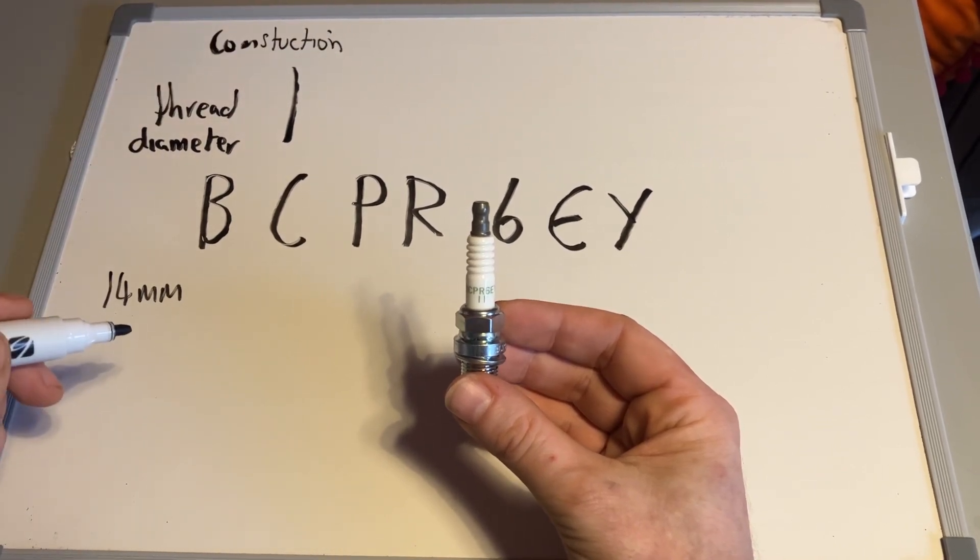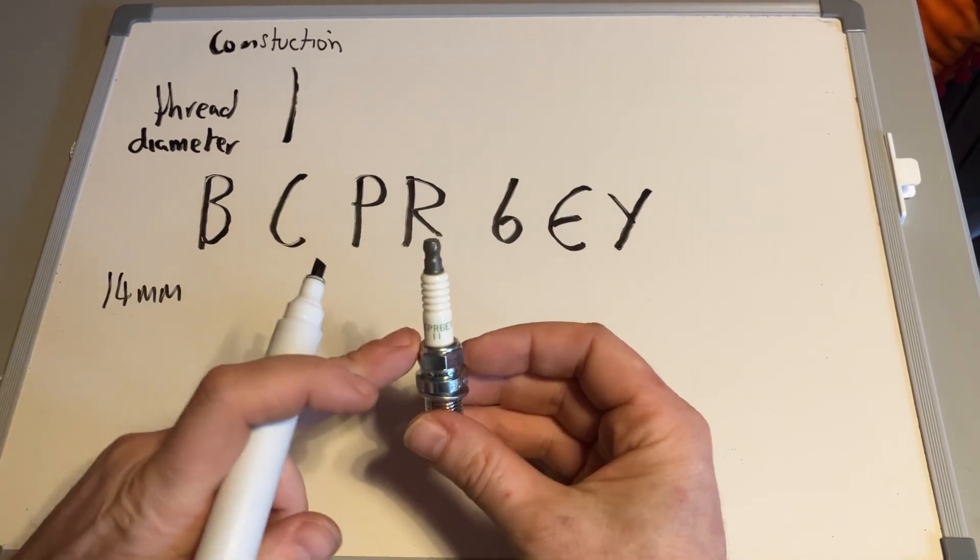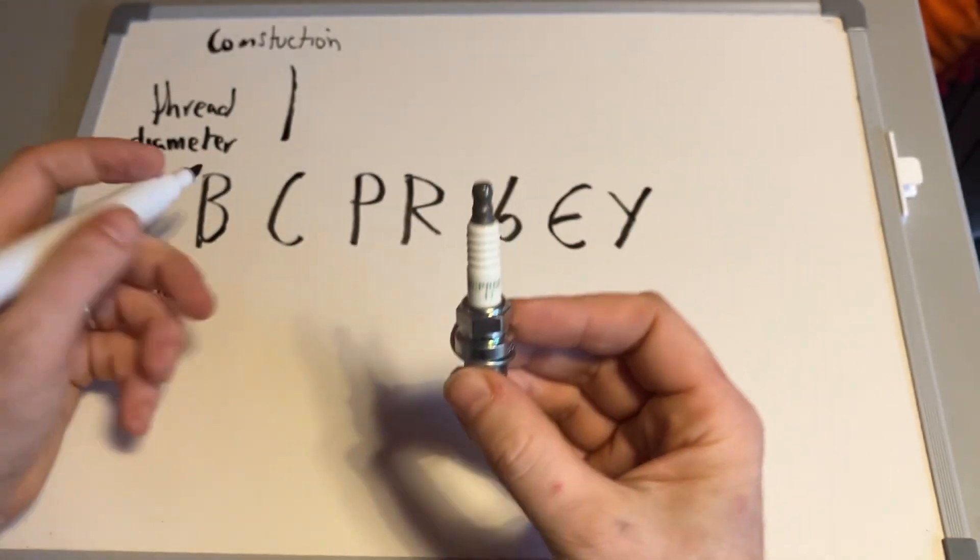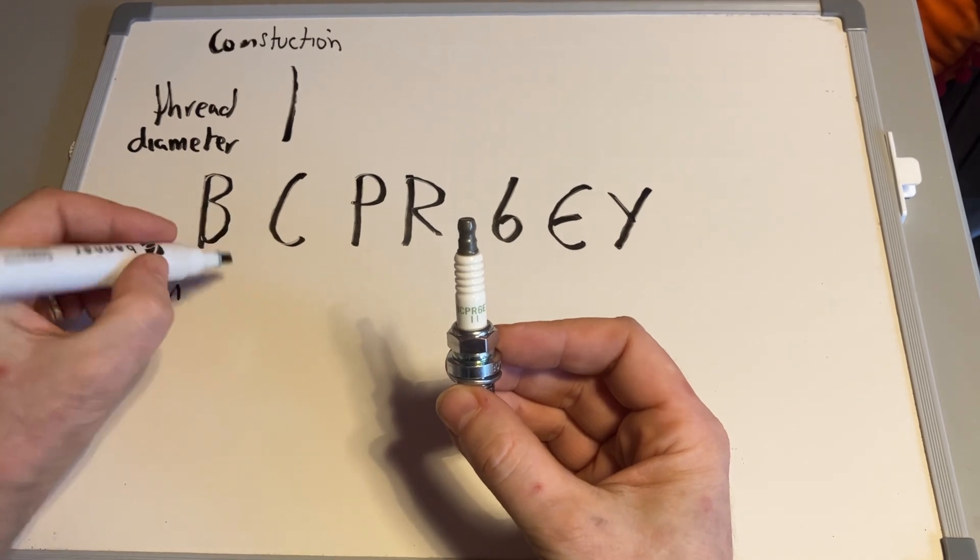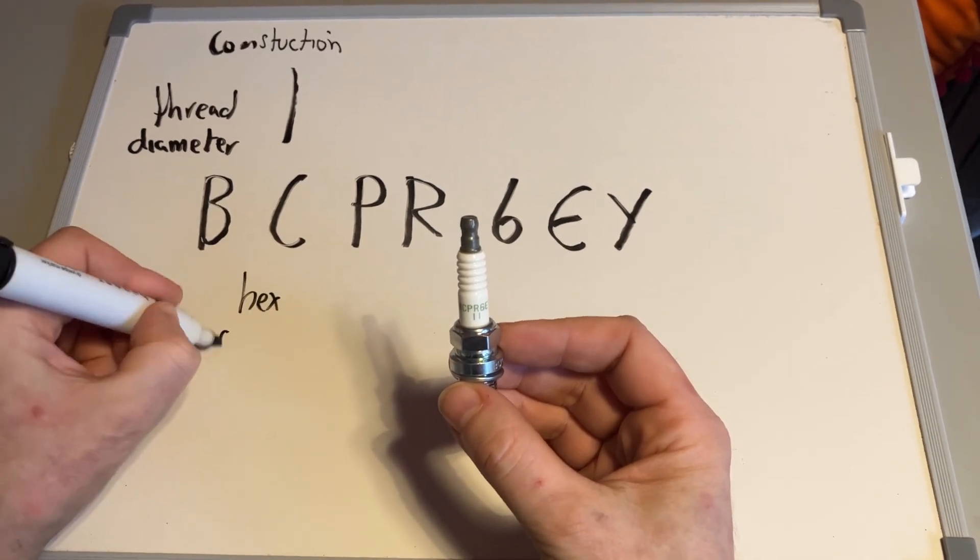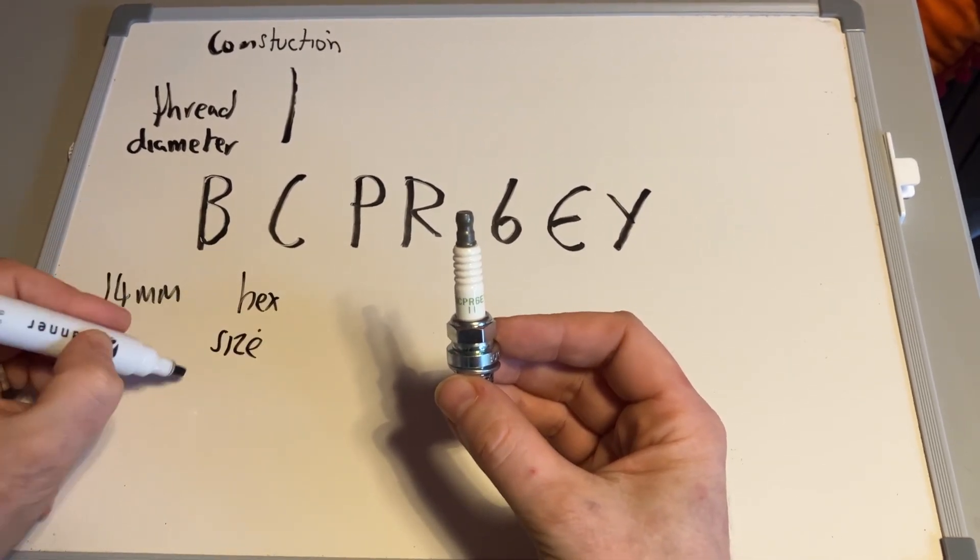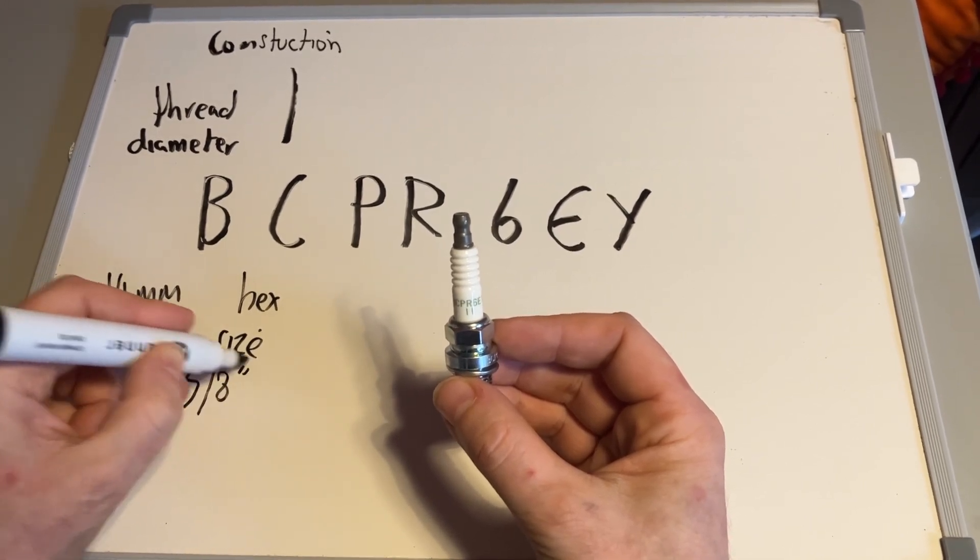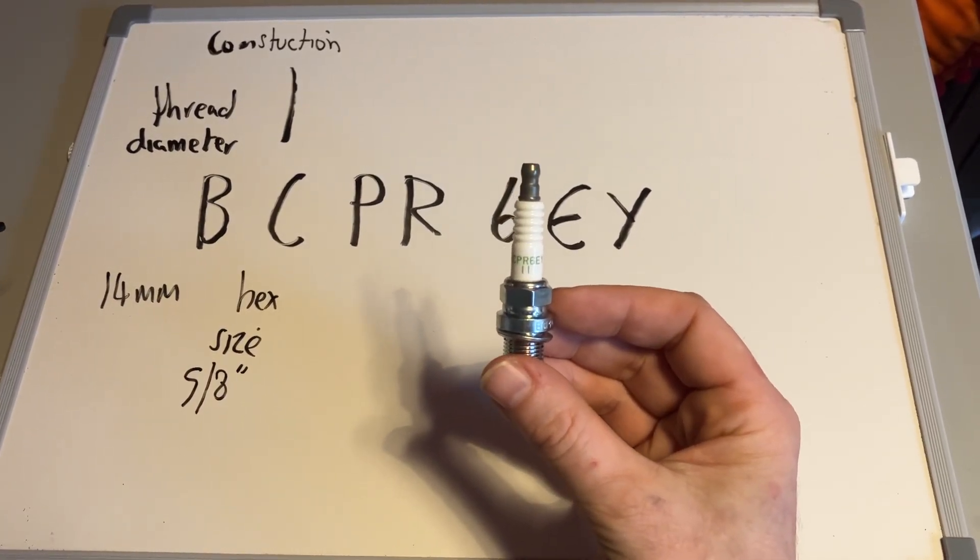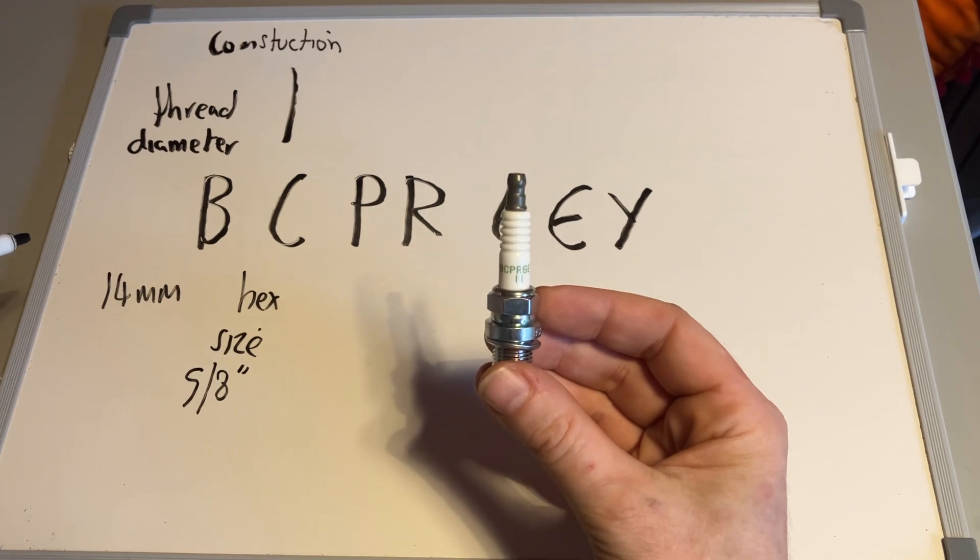In this case, the construction is to do with the size of the hex bolt here. This hex bolt is designed to be removed with a hex size of 5/8 of an inch. The next one, P and R, are to do with the way